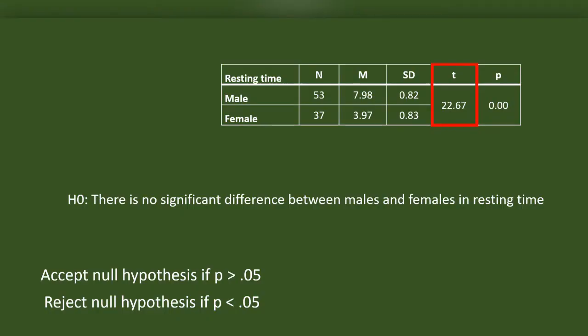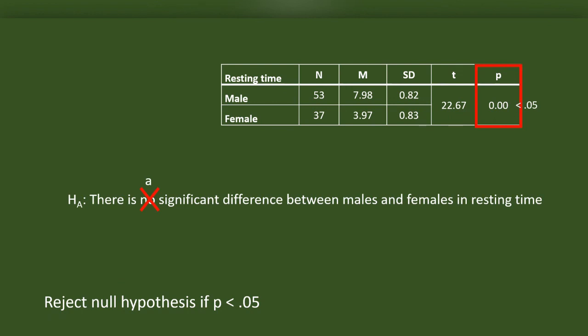This is the table we just prepared. The t-value is 22.67, which is the most important value. It indicates whether there is a significant difference between males and females in resting time. The p-value for t is 0.00, which is definitely less than 0.05, so the difference is significant. We reject the null hypothesis and accept the alternative: there is a significant difference between males and females in resting time.